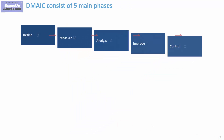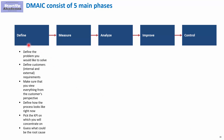In the Define stage, we try to define what is actually the problem we are trying to solve and what is the current situation we want to improve. This quite often requires defining the process and the customers — remember you have internal and external customers. You must look from the perspective of the customer, since the aim is to make the customer more happy. You also have to pick the process you want to improve and decide which KPI of that process you want to improve.